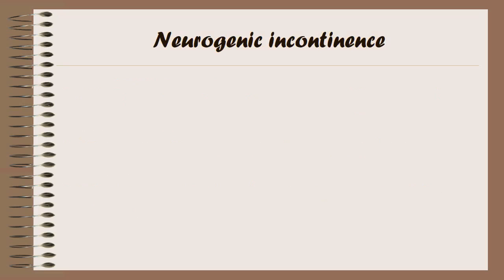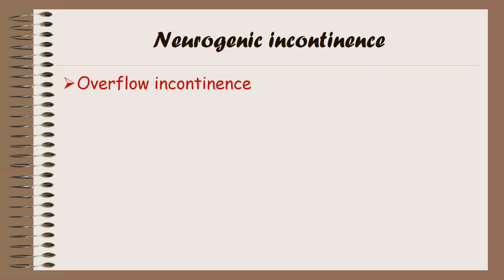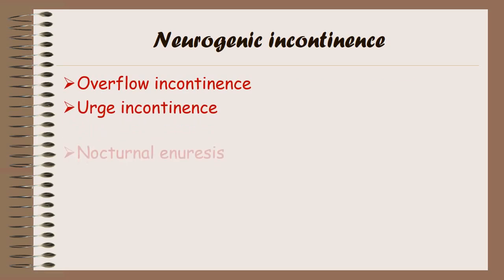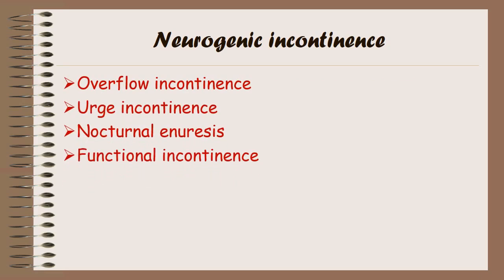Amongst these various types of urinary incontinence, neurogenic incontinence can present as overflow incontinence, urge incontinence, nocturnal enuresis, or functional incontinence.